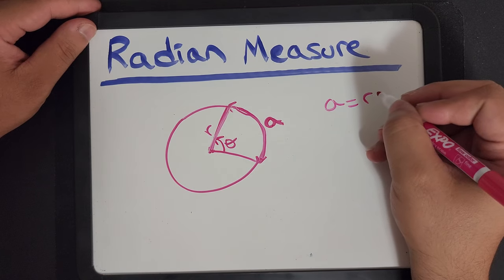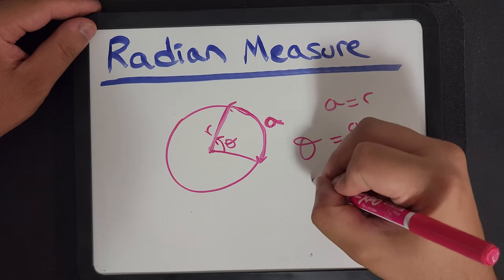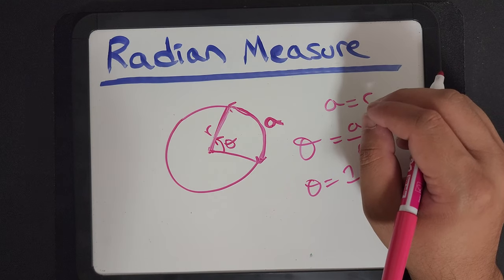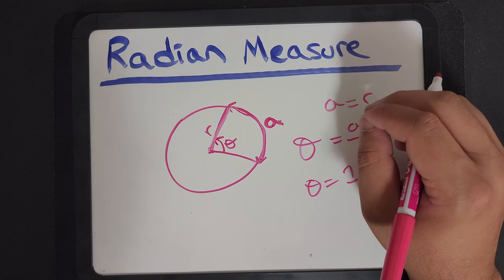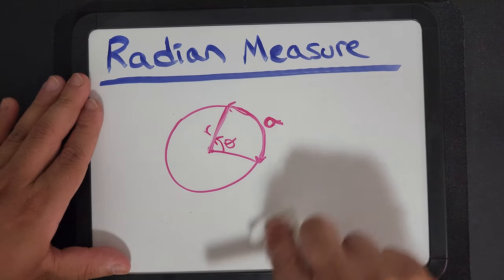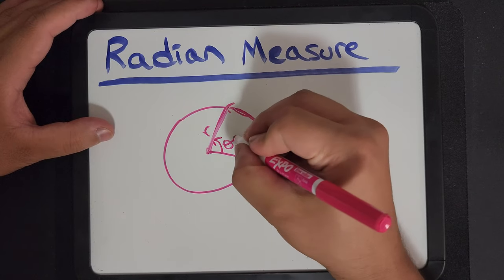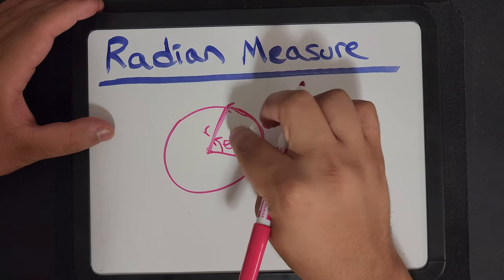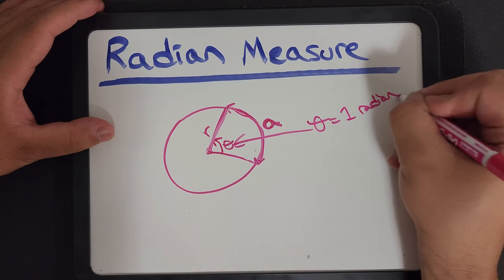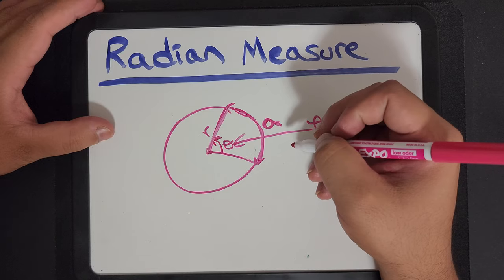But basically, A has to be equal to R. And that way, theta is equal to A over R. Theta is equal to 1 because they're equal to each other. So, that is how we are going to be... Well, that's basically a brief intro to what a radian is. So, understand that theta is equal to 1, 1 radian, if A and R are the same.